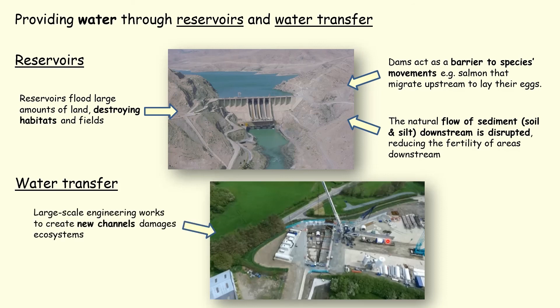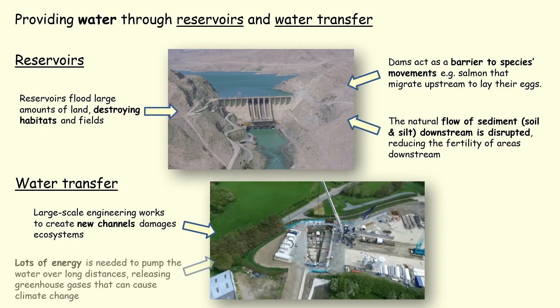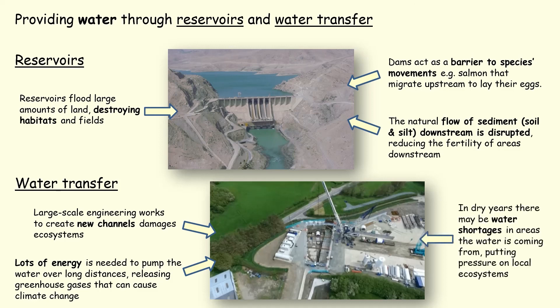What are the problems with water transfer? Large-scale engineering works creating the new channels damage the ecosystems. Lots of energy is needed to pump the water over the hundreds of miles it needs to move, which releases greenhouse gases and can help to cause climate change. Finally, in dry years there may be water shortages in the areas that the water is coming from — for example, in north Wales — and this puts pressure on the local ecosystems.